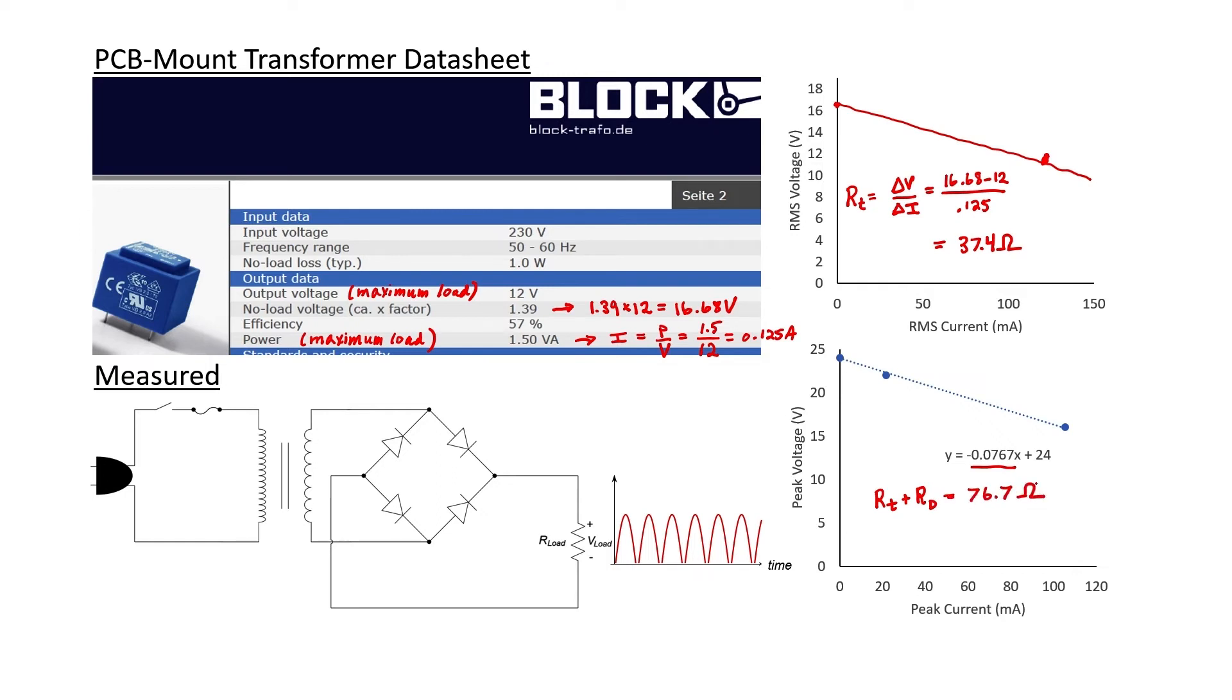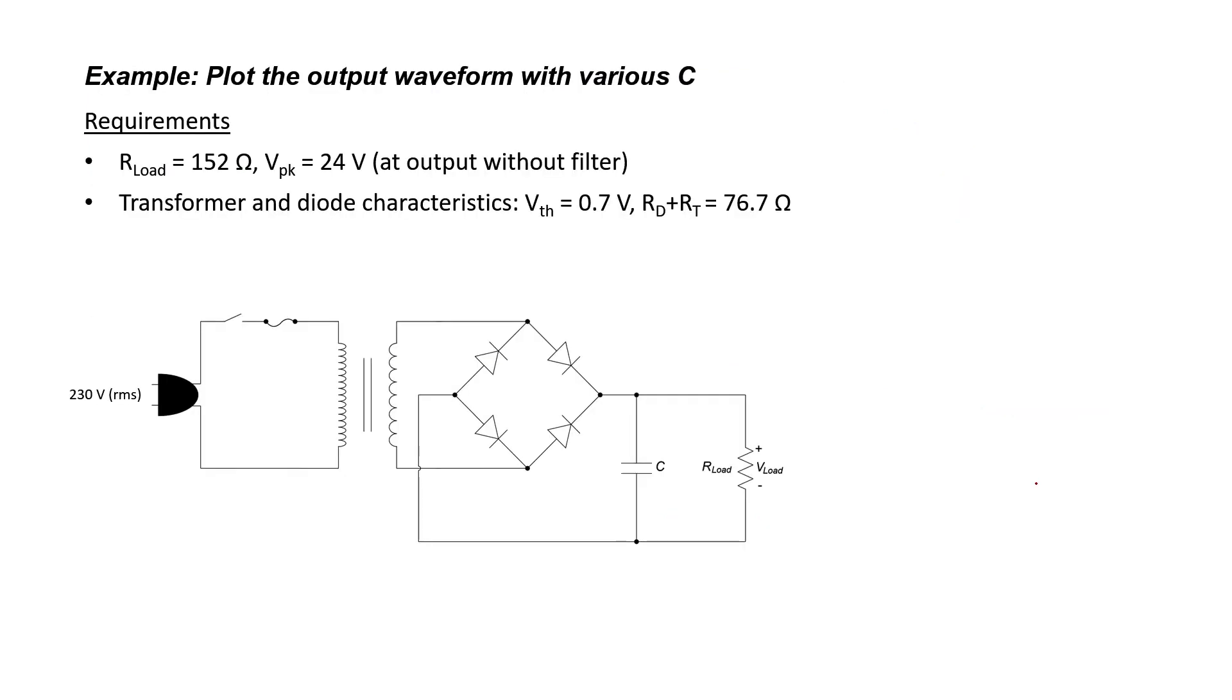Together, of course, the resistance is higher than that of the transformer alone. This is what we're going to use in our model, 76.7 ohms. I would now like to work out a detailed example: Plot the output waveform with various choices of the ripple capacitor.